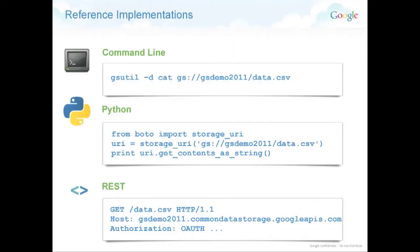So gsutil — I'll open my terminal from the Mac to show you how it works. Here's an example from Python: just three lines. You take the library, pass the command, and the URL is gs — Google Storage — colon slash slash.